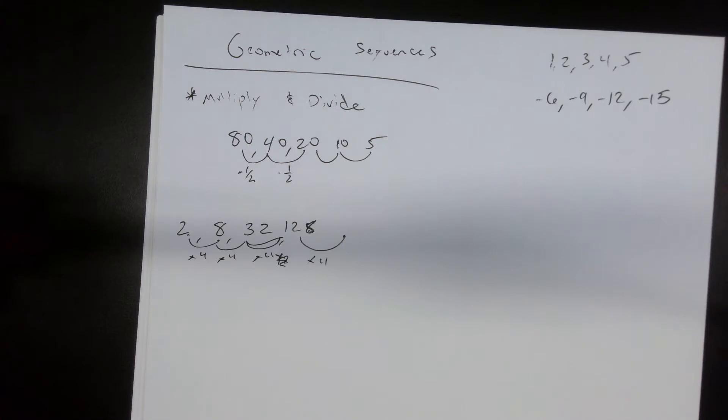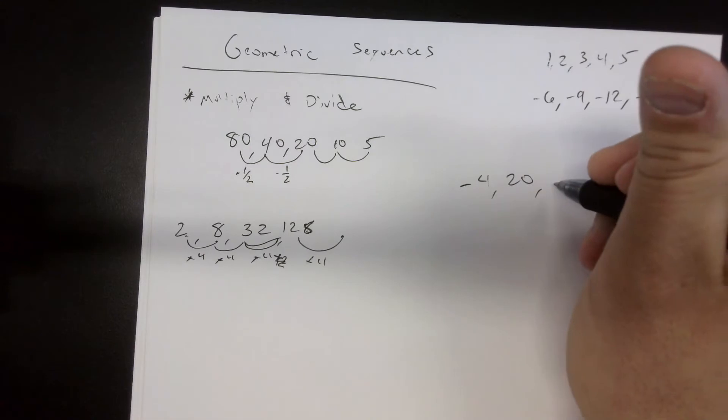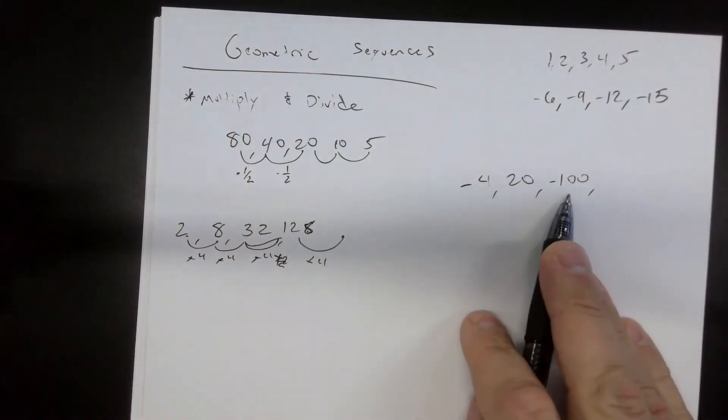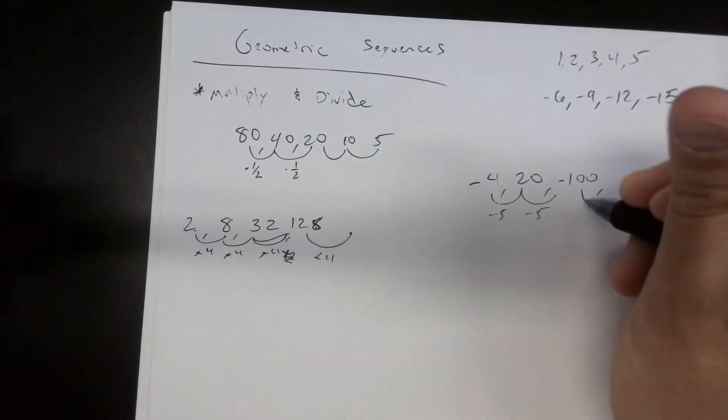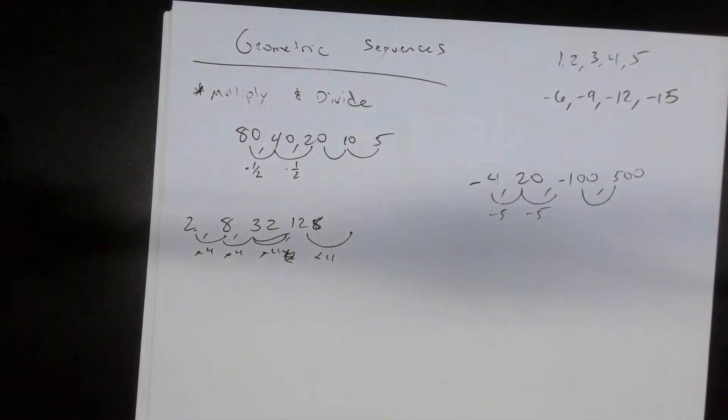Now these things can look as different as possible, but remember you're always multiplying. If you're dividing, it's actually just a fraction you're multiplying by. But if we happen to have like negative 4, 20, negative 100, what is happening to each one of these? We're multiplying by negative five. So what would be the next one? 500. Yeah, positive 500.